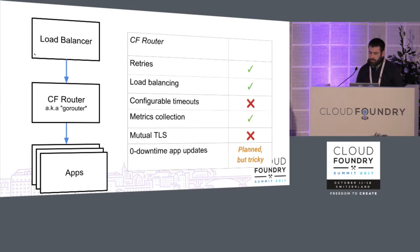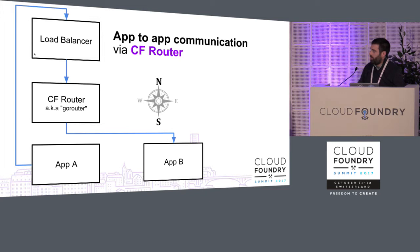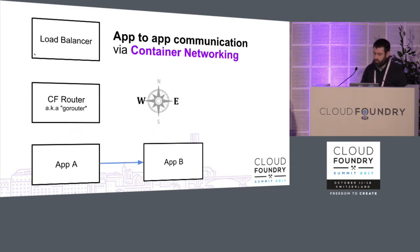In the north-south approach using the Cloud Foundry router, traffic comes in from the load balancer, and the router provides some microservice features — retries, load balancing, and metrics collection — but not all of them. If you didn't want hair pinning, where app A has to go out through the front door to reach app B (which also exposes app B to the public), you could take advantage of the new container networking features, which allow app A to reach app B directly.